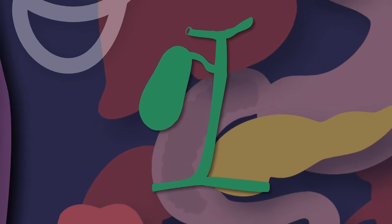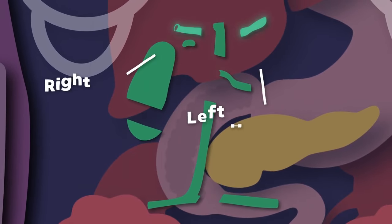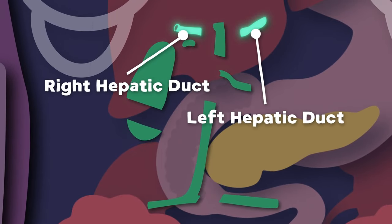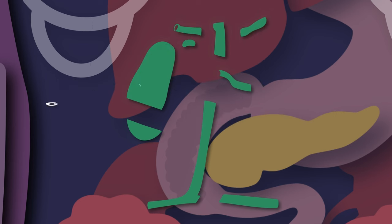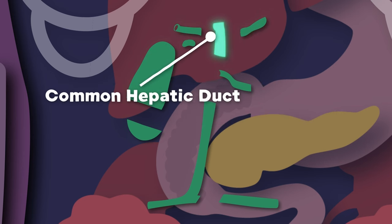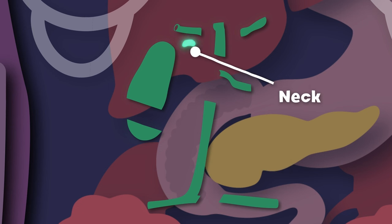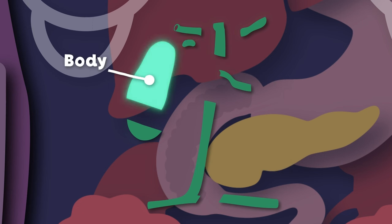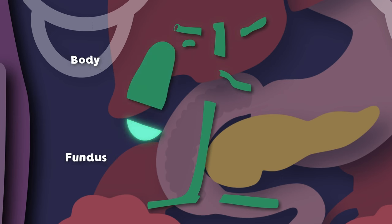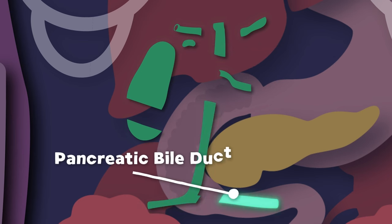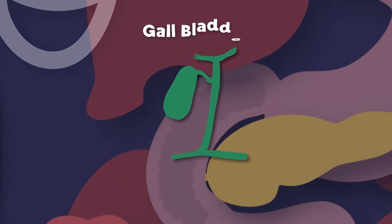And I have several parts. The right and left hepatic ducts are where we will start. Here's the common hepatic duct. Then the cystic duct sits where it is tucked. Then we move to the neck, which is attached to the body and the rounded fundus, to the common bile duct and the pancreatic duct — that is what I'm made of. I am your gallbladder.